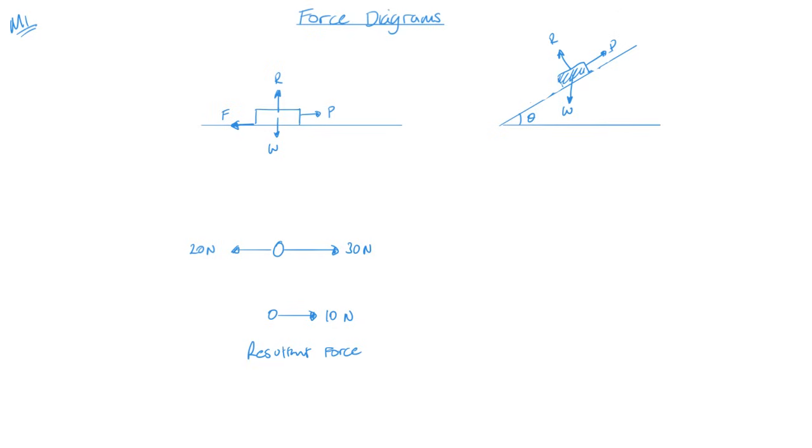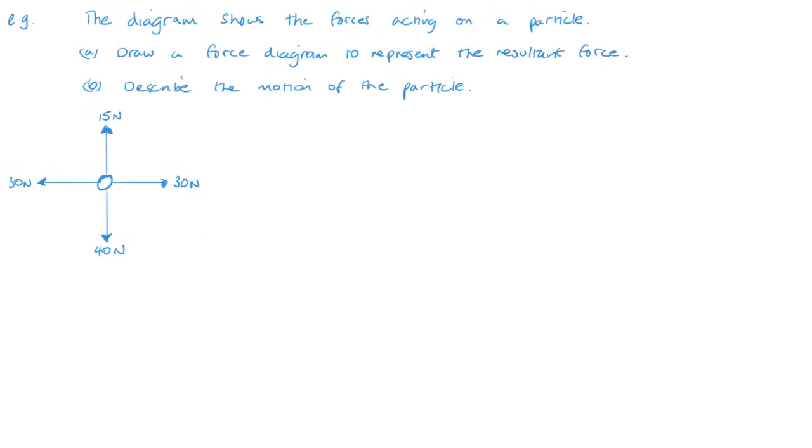And here we have it. So the diagram shows forces acting on a particle. Draw a force diagram to represent the resultant force. Now the forces left and right, 30 and 30 there, they're going to cancel each other out, meaning this object is not going to move left or right. And then up and down, so 40 take away 15 is going to leave me 25. So this is going to have a resultant force of 25 newtons downwards.